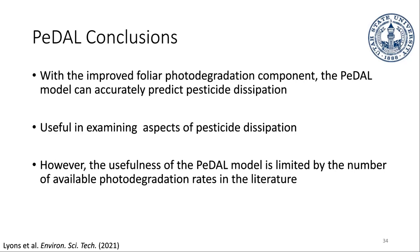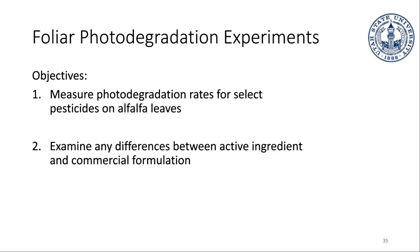The model works pretty well in terms of predicting pesticide dissipation, but there's not a lot of data available in terms of making it applicable, because not many pesticides have had the necessary photodegradation rates measured for them. As I showed at the beginning, one degraded in only six hours while the other degraded in 500. So having those chemical-specific rates is important because there is going to be that wide range of differences. That led to the second portion of my research, which is actually measuring some of those rates.